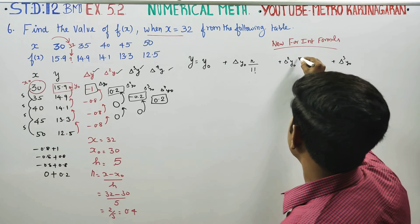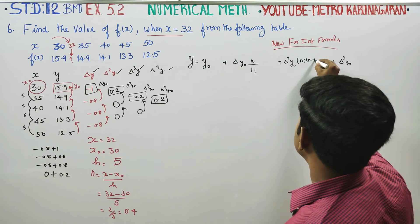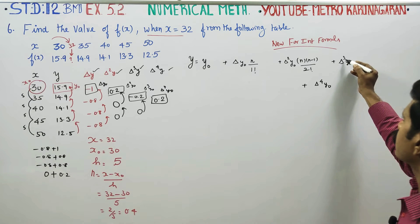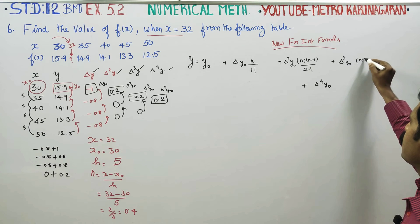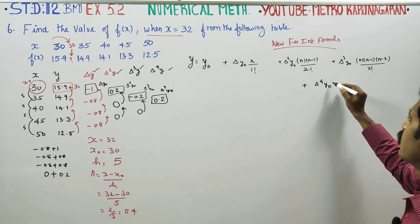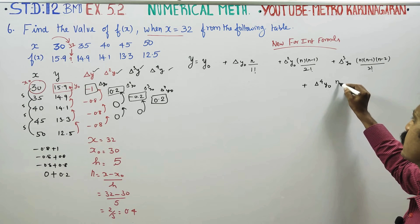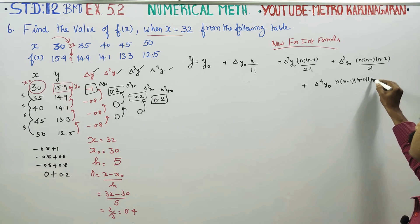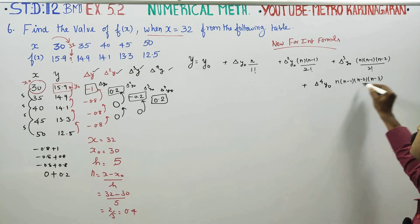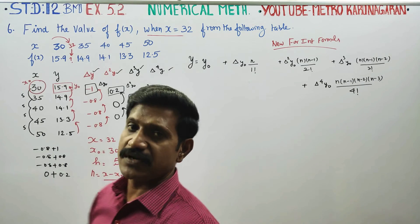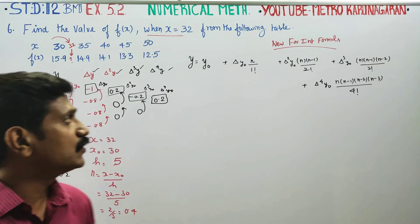The Newton Forward Interpolation formula terms include: n, n(n−1)/2!, n(n−1)(n−2)/3!, and n(n−1)(n−2)(n−3)/4!. Everything is ready — now substitute the values.